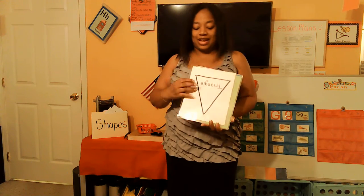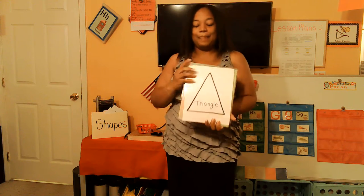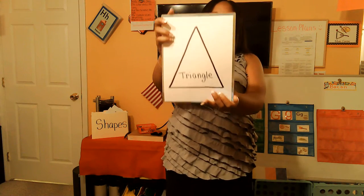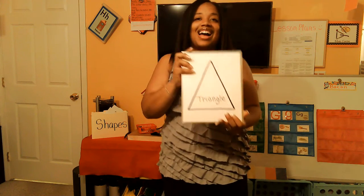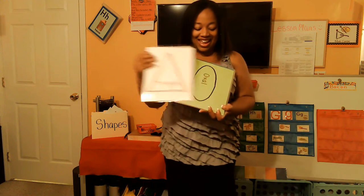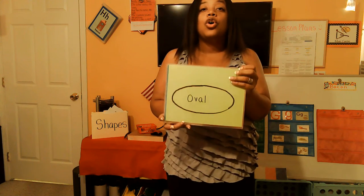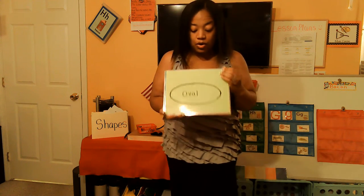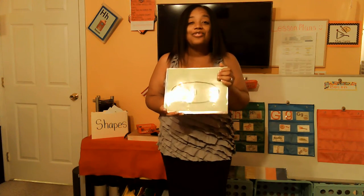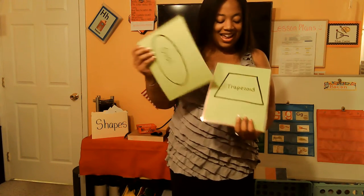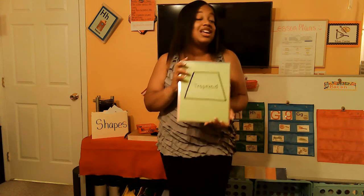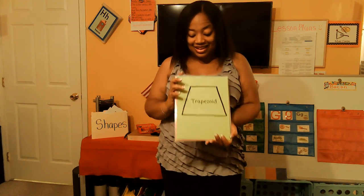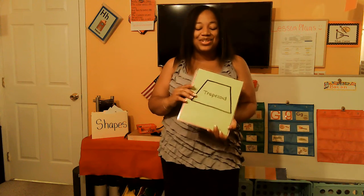Uh-oh, this one's upside down. That's okay. This is a triangle, triangle, triangle. This is a triangle today. This is an oval, oval, oval. This is an oval today. This is a trapezoid, trapezoid, trapezoid. This is a trapezoid today.